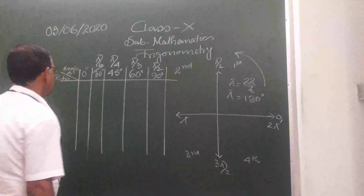The cosine values are just the sine values written in reverse order: cos 0° = 1, cos 30° = √3/2, cos 45° = 1/√2, cos 60° = 1/2, cos 90° = 0. Notice: sin 30° equals cos 60°, and cos 30° equals sin 60° — they are complementary and cross each other.